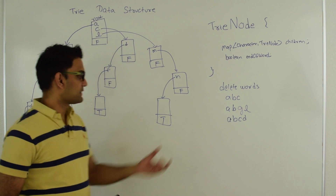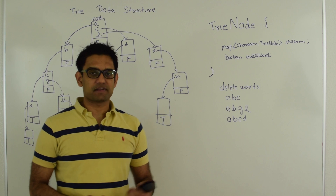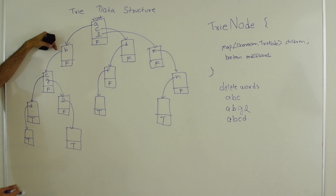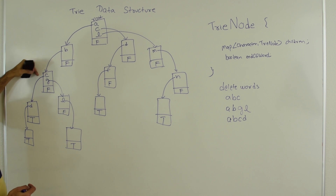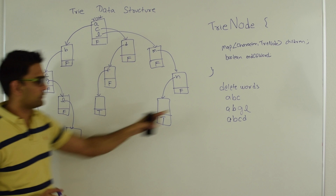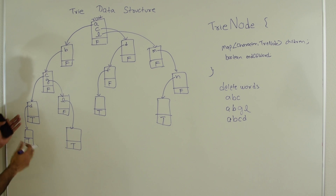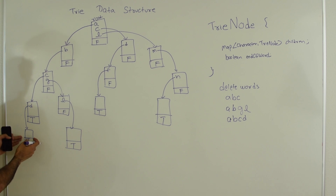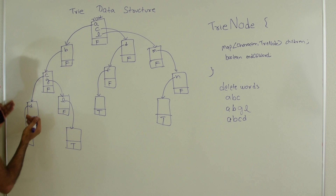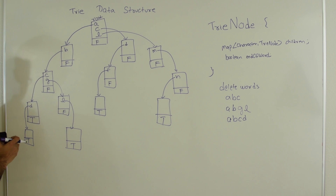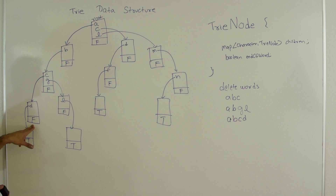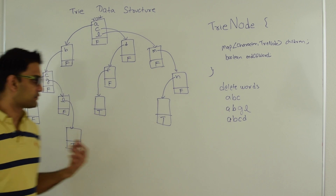Delete also comes in two flavors: delete the entire word, or delete all words starting with a given prefix. Let's try to delete ABC. We follow A, B, C and reach the Trie node for C. We cannot just delete this node because that would also lose the word ABCD represented by a link from here. Since this node's map is not empty, we cannot remove it. So all we do is set end-of-word to FALSE. Now if someone searches for ABC, they reach this point and find end-of-word is false, meaning ABC does not exist — that's how we deleted ABC.